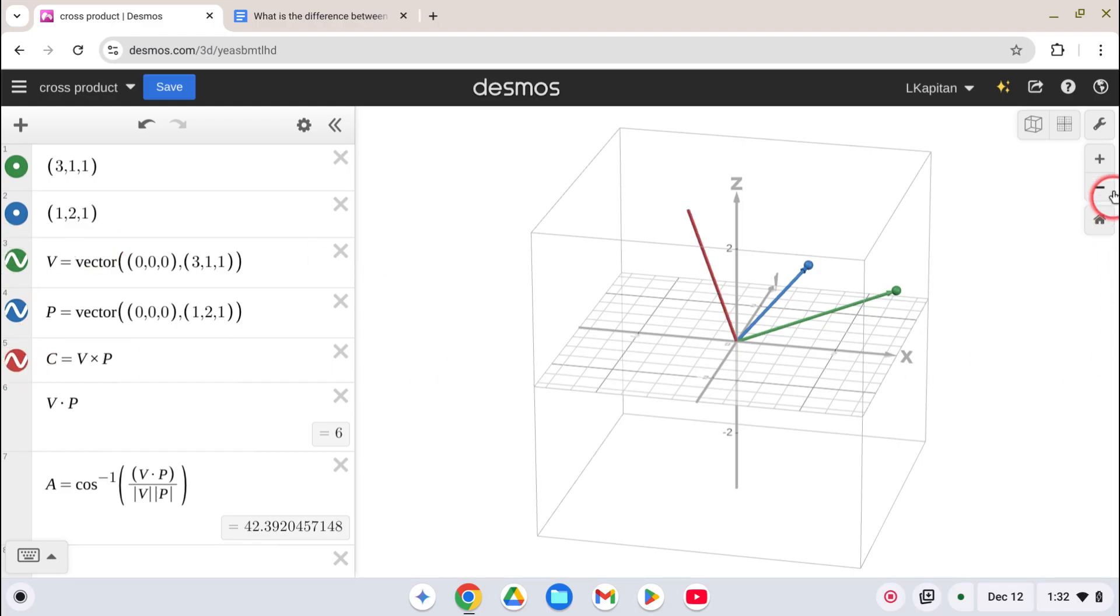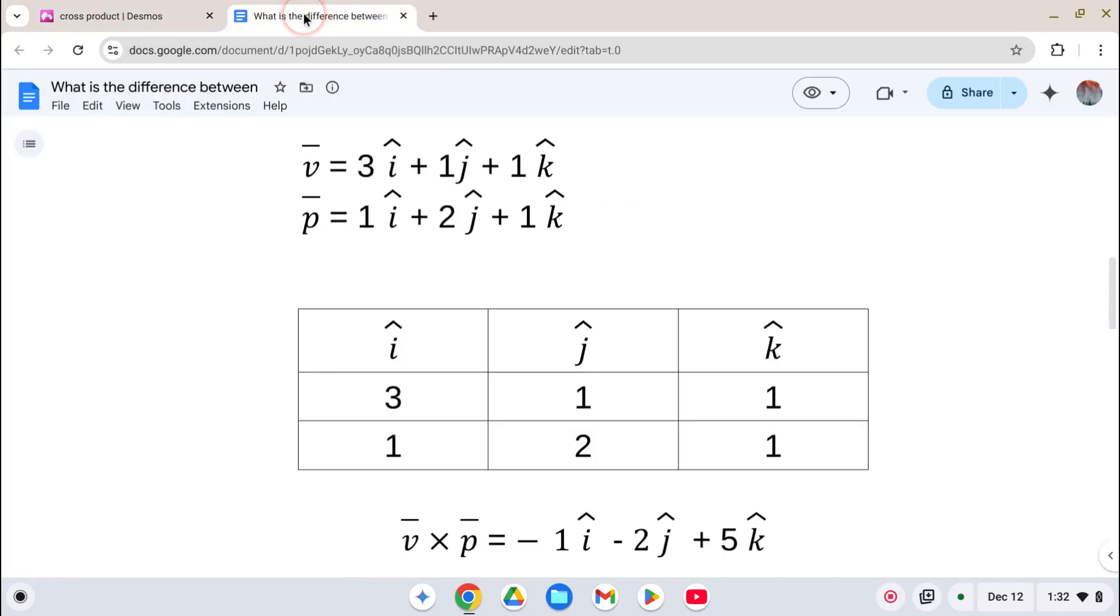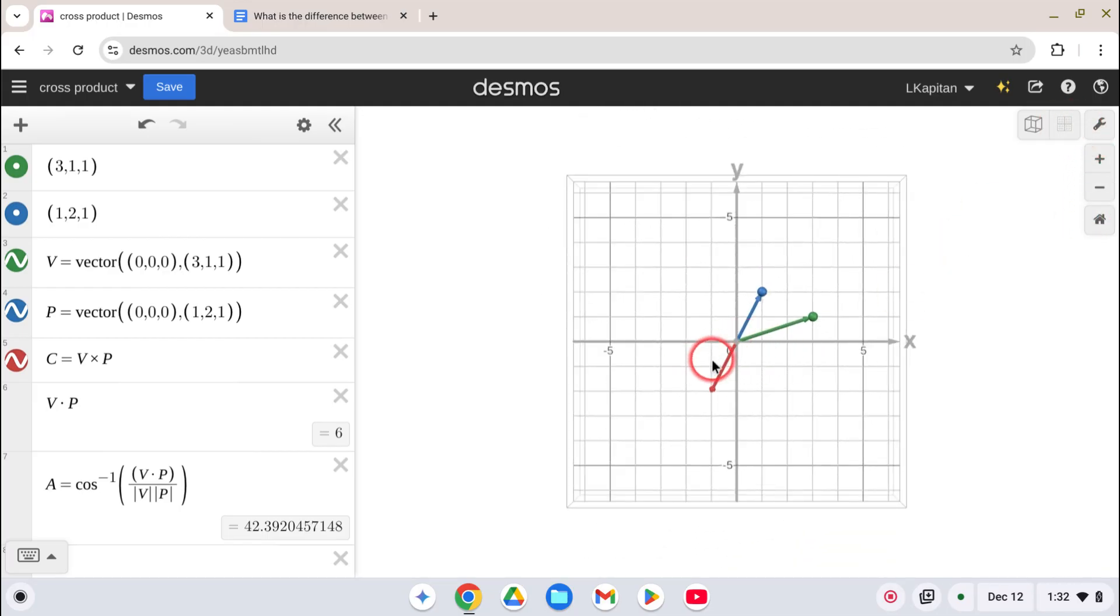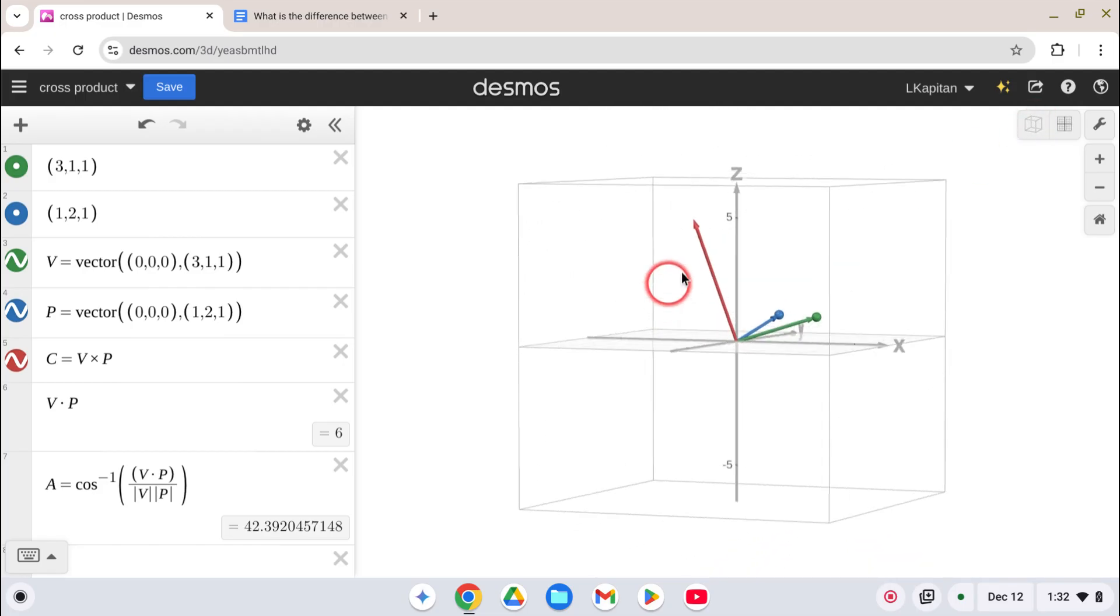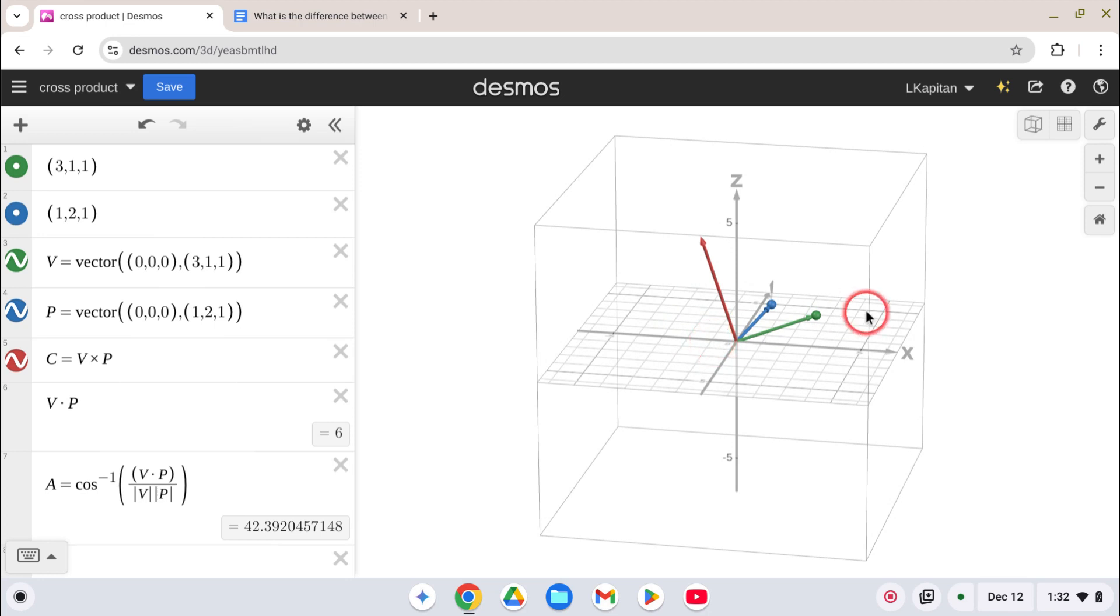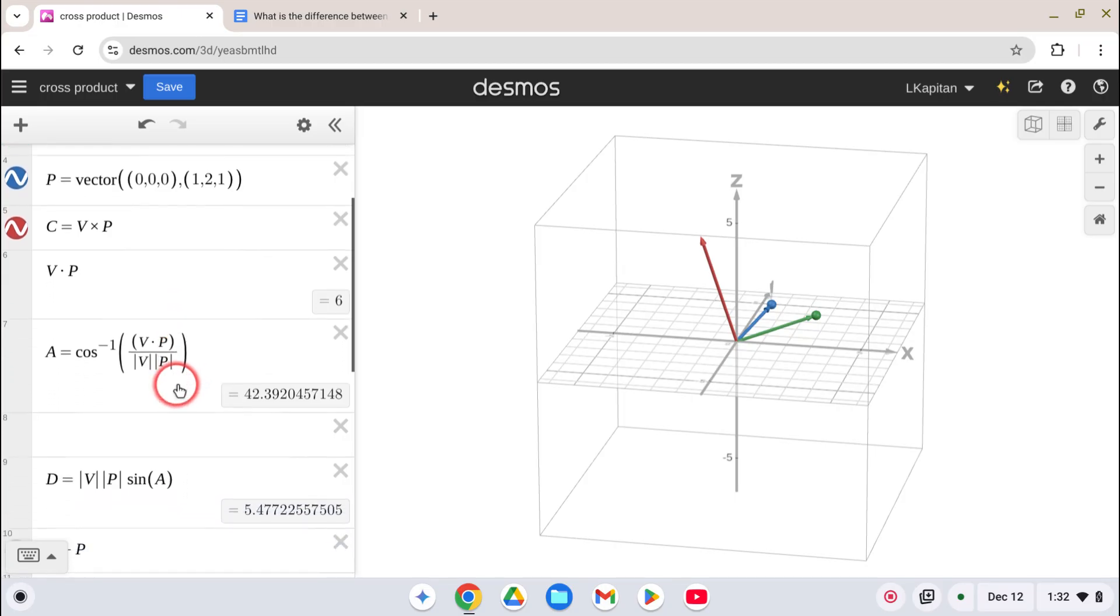So let's look at it. So there it is. And it's supposed to be negative 1, negative 2, 5. So let's look. Negative 1, negative 2, 5. So that looks right. Now, what is the magnitude of this? Well, the magnitude of this is given by the magnitude of V times the magnitude of P times the sine of the angle between them.